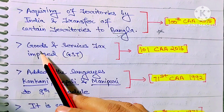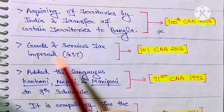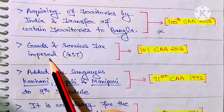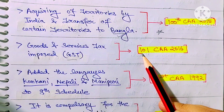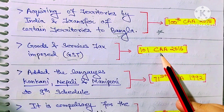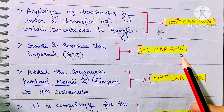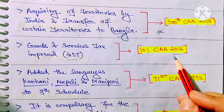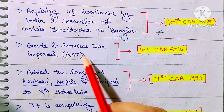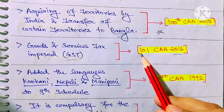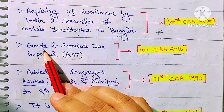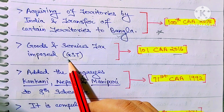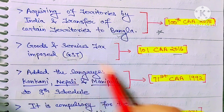After that: Goods and Services Tax (GST) was imposed through the 101st Constitution Amendment Act 2016. Through this amendment act, the Goods and Services Tax was incorporated into the Constitution.